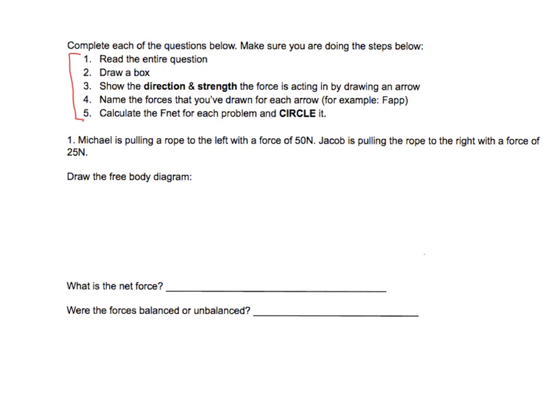The first question says Michael is pulling a rope to the left with a force of 50 Newtons. Jacob is pulling the rope to the right with a force of 25 Newtons. Draw the free body diagram. Whenever drawing a free body diagram, you begin by drawing a square, and then you go through the problem to include all of the different information.